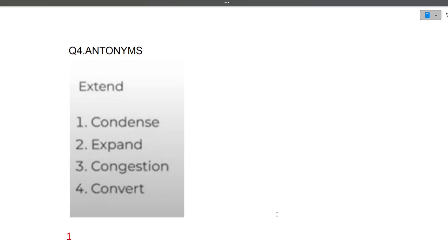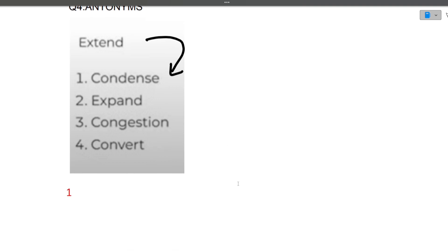The next question is antonym — antonym means the opposite of a word. The word for which we need to find an antonym is 'extend.' Extend means to expand, so the antonym will be 'condense,' because condense means to reduce. So the simple antonym of extend is condense. I hope this question is also clear to you.